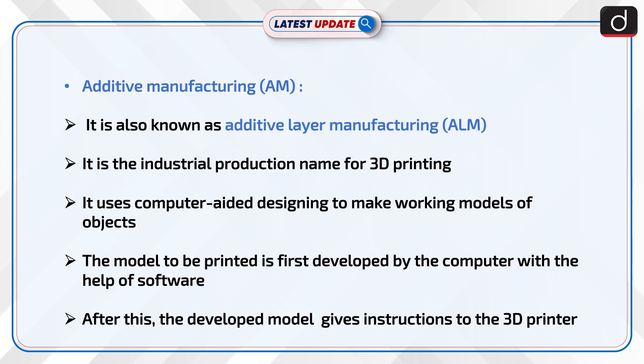Additive manufacturing, or AM, is also known as additive layer manufacturing, or ALM. It is the industrial production name for 3D printing. It uses computer-aided designing to make working models of objects.